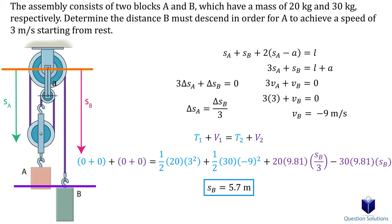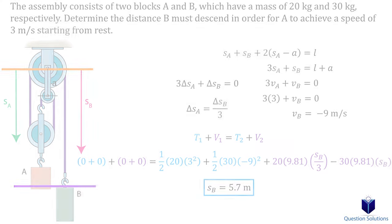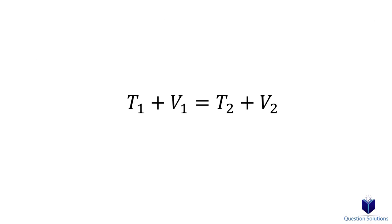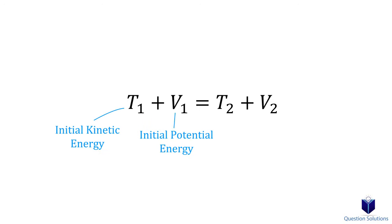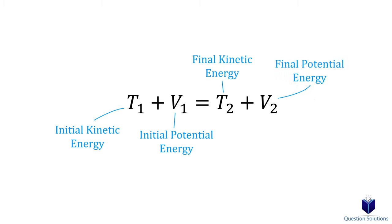You can also do this without drawing another datum for the blocks and just use the datum established for the pulley, but it's harder to understand the concept at the beginning with just one datum. This should cover the types of problems you will face in this chapter. As long as you account for the initial kinetic and potential energy and then think about the final kinetic and potential energy, the questions can be broken down into fairly easy chunks.